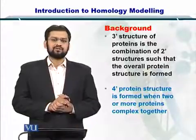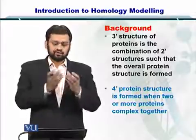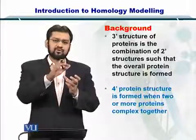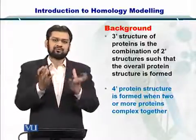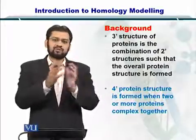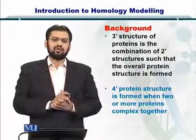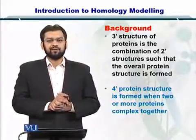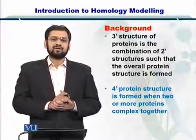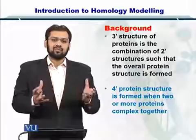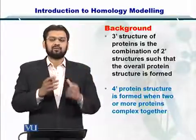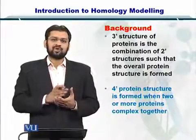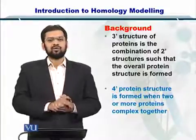Next is the tertiary structure of the proteins, or the three prime structure. The secondary structure elements — helices, beta sheets, loops, and coils — come together in various conformations. Once the secondary structures combine to take an overall form, this is the tertiary structure. Then the quaternary structure, or four prime structure, is formed when two complete proteins come together and make a complex through protein-protein interaction. So these four types of structures exist for different proteins.